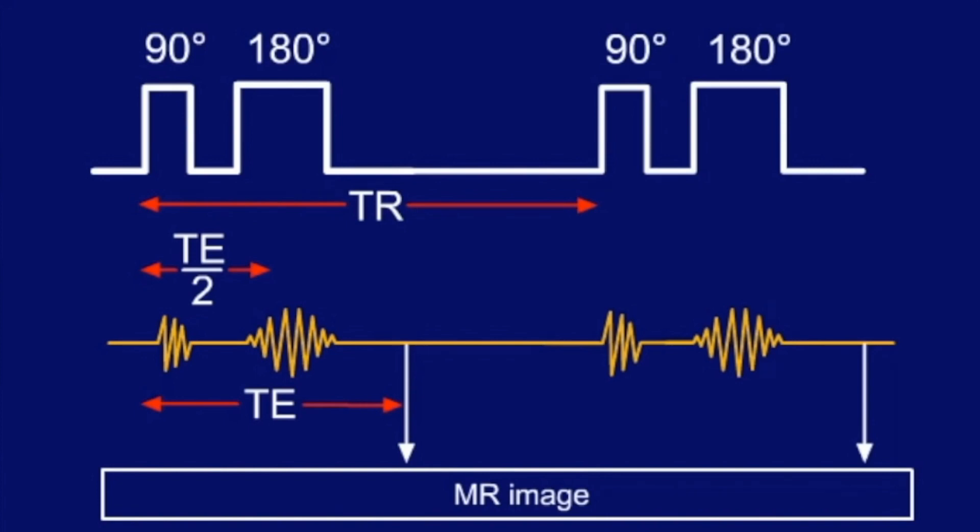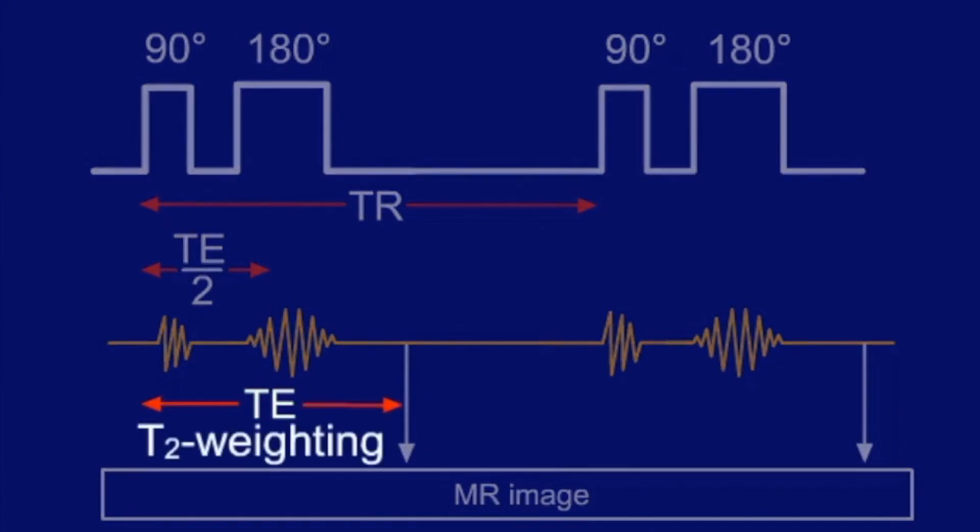What did the TE and the TR do? They determined how the resulting image was weighted. TE was responsible for the T2 weighting. TR for the T1 weighting.